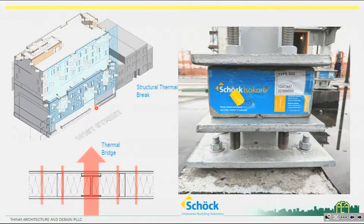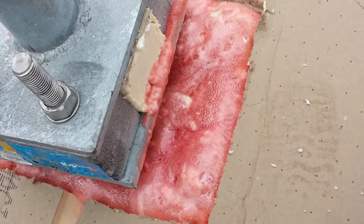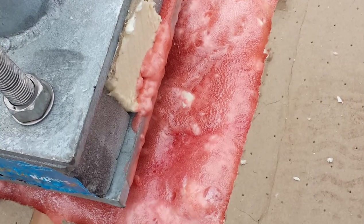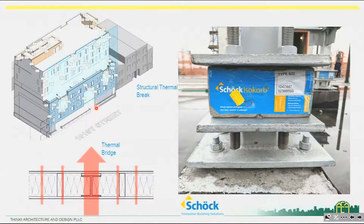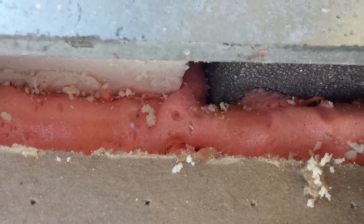Insulation outboard of the studs is one example. Up on our roof, we have two rooftop HRVs providing ventilation to the building, but that structural steel dunnage needs to connect back down to the concrete. To break the thermal bridge between the concrete deck and the steel dunnage, we use this Schöck product — a structural insulation product with stainless steel bolts that breaks the linkage between the steel dunnage and the concrete.